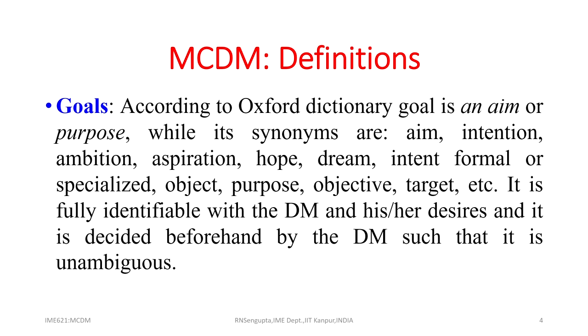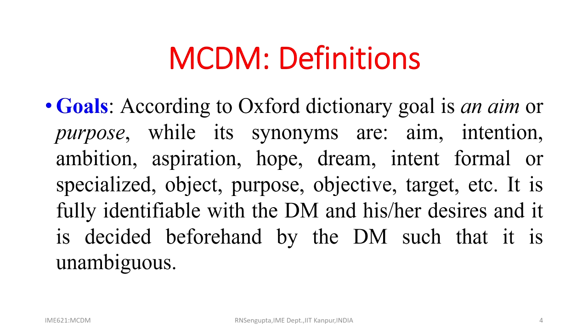A goal may be: I want to own a house, or I want to buy a car with a specific horsepower, price, or make. Another goal can be getting admission into top-notch engineering, management, or social science colleges in India or abroad. These goals are fully identifiable with the decision maker and their desires, decided beforehand such that it is unambiguous to them.